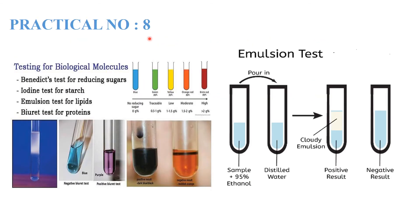The emulsion test is used to detect and identify lipids (fats) in a sample. In this test, 95% ethanol is first added to the sample, and then water is added in the second step. If a cloudy white emulsion forms, the emulsion test is positive, indicating the presence of lipids. If no cloudiness forms, the test is negative. This is a very simple test for the identification of lipids.